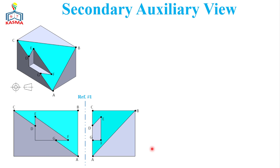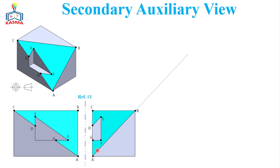From the true length line we can extend a collinear line. In this case we can use line AB, because we have space to construct the auxiliary view on that portion. You can also use the other inclined lines, and you can use either the front view or the side view — it will be based on the space available. Make sure that all points are properly labeled with their letters on both views.